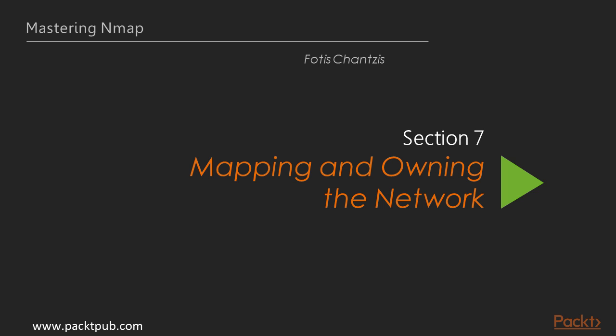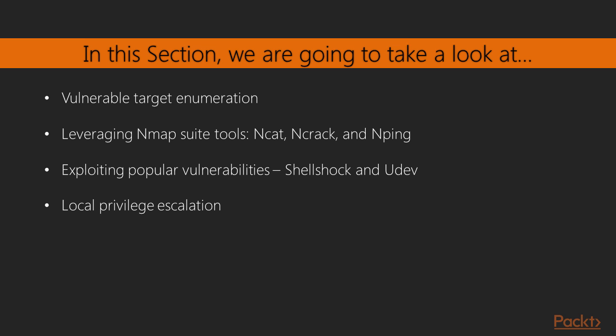In this final section, we are going to combine all of our previously gained knowledge and experience with Nmap to map and then gain access to the whole network. We are going to first learn about the network's overall security posture by scanning every host and searching for services that might be vulnerable. We are then going to use other tools of the Nmap suite such as NCAT, Nping, and Ncrack to conduct our assessment. We will also exploit the popular shellshock vulnerability and demonstrate how an attacker could take advantage of unpatched servers to perform remote code execution and gain access, as well as elevate local privileges to root by exploiting unpatched systems.